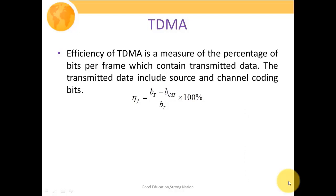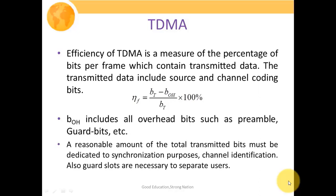BT is the total number of bits transmitted from source to destination. BOH is the overhead bits — these are not part of the information but are necessary for effective signal transmission. BOH includes all overhead bits such as preamble, guard bits, etc. Apart from information bits and channel coding bits, all remaining bits are considered overhead bits.